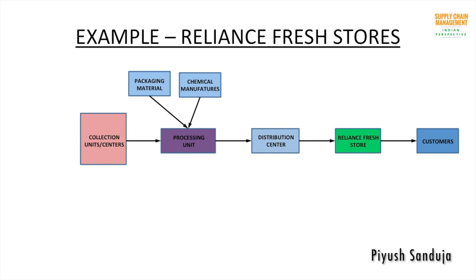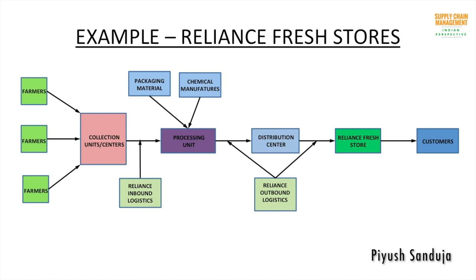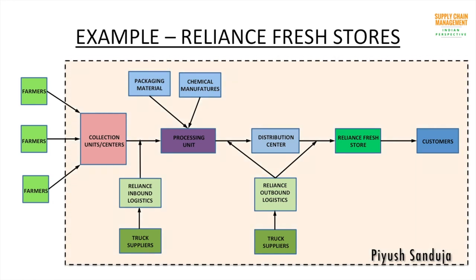Though there are farmers who bring their produce to the collection centers, that is not in Reliance's scope, as that transportation cost is borne by farmers only. The remaining logistics, whether inbound or outbound, is handled by RelianceLogistics. The logistics unit, which supplies trucks for transportation, works as a supplier — that is the fifth stage — for all other stages involved. The scope of Reliance's control is represented by the large orange dotted rectangle that encompasses all stages but not farmers. This example clearly lays down the role and placement of different stages in order to fulfill a customer's need.